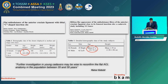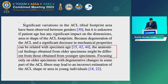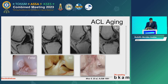The mean age of specimens in the study by Siebel was 78 years, and in the other study it was 67 years. They noted in their discussion section that further investigation in young cadavers may be wise to reconfirm the ACL flat anatomy in the population between 20 and 30 years old. We have known for many years about the morphological changes that occur in ACL morphology with aging — the morphology changes noticeably at 20, 40, 60, and 80 years.